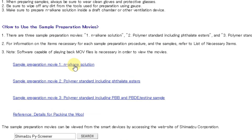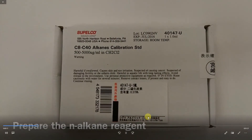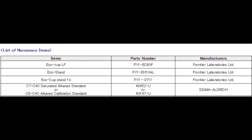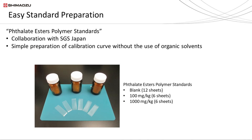Let's start with the sample preparation function. Inside this page, it consists of three different videos on different types of sample preparation. If you click on the link, a video will be loaded showing you how to prepare samples. If we scroll down all the way below, part numbers for consumables are given for users to order. Another advantage is that users can purchase phthalate ester standards from Shimadzu if they have already purchased a pyrolyzer, GC-MS, and PY Screener from Shimadzu.